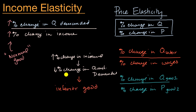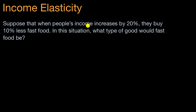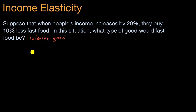So there are two big things to take away: you don't just have to think about price elasticity of supply or demand — there are other types of elasticities. To hit the point home on income elasticity, let's look at a few examples. Suppose that when people's income increases by 20%, they buy 10% less fast food. What type of good would fast food be? Pause this video and think about it. Well, their income is increasing but their demand is decreasing — that's the situation we just talked about. This is an inferior good. And what is the income elasticity of demand here?